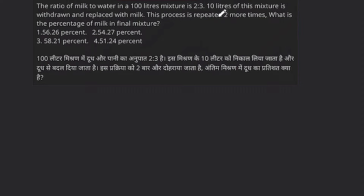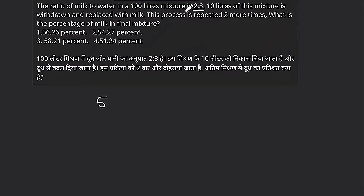Okay, so milk is being changed here. Let's focus on milk. Now let's look at water — what is happening with water. So if we look at water and milk, the ratio is 2:3. If the ratio of milk to water is 2:3, the total mixture is 5 parts. Out of 5, water is 3 parts — so the water fraction is 3/5.